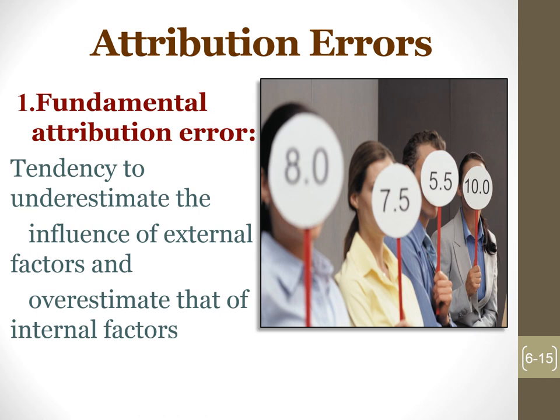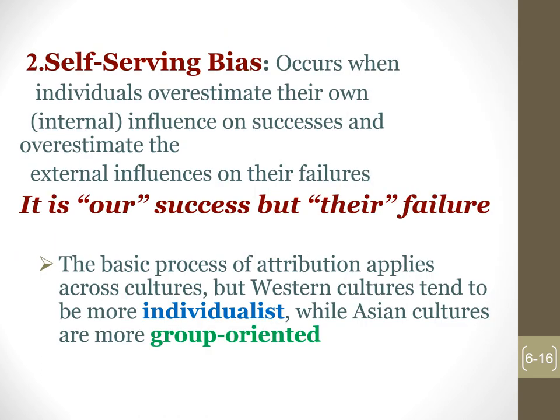What are attribution errors? There are two errors. First, fundamental attribution error: tends to underestimate the influence of external factors and overestimate the influence of internal factors. Second, self-serving bias: occurs when individuals overestimate their own internal influence on success and overestimate external influence on their failures — our success is internal, but our failures are external.